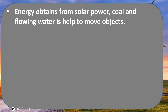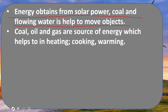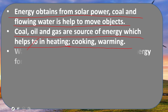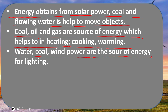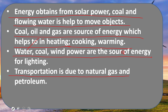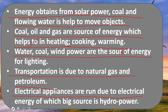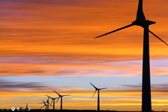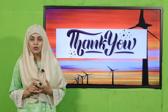In today's lecture we have learned that energy obtained from solar power, coal, and flowing water helps to move objects. Coal, oil, and gas are the sources of energy that help in heating, cooking, and warming. Water, coal, and wind power are sources of energy for lighting. Transportation relies on natural gas and petroleum. Electrical appliances run on electrical energy, whose main source is hydropower. I hope you enjoyed today's lecture and learned about the different uses of energy. Keep everybody around you safe, have a good day, thank you.